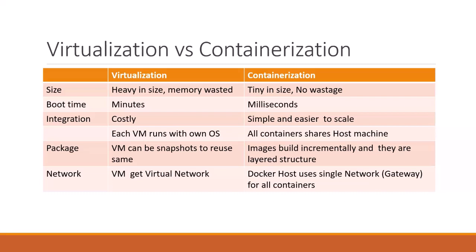Integration is costly for virtual machines — it takes time, and time means cost. When you want to integrate containers it is super simple and easy. You can make N number of containers — say I want 10 Tomcat containers, just set scale equal to 10 or replicas equal to 10 and it will increase the number of containers. In virtualization, the host machine OS is created separately again and again, taking more memory each time.